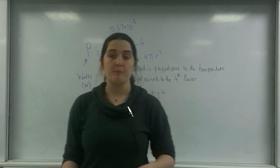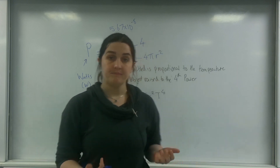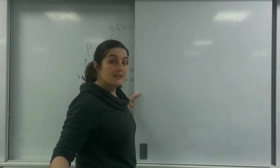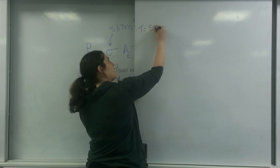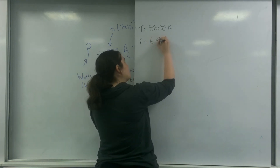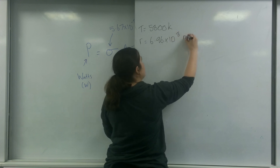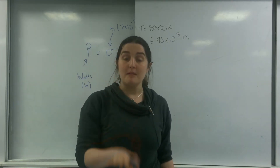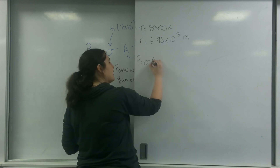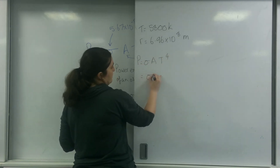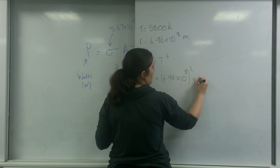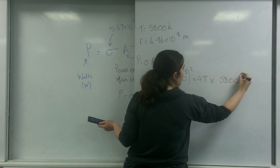Let's do some calculations to make some comparisons, starting with our sun. Our sun's temperature is approximately 5,800 Kelvin, and the radius of our sun — which is in your data sheet — is 6.96 times 10 to the 8 metres. We can work out the power emitted from our sun using this formula: power equals sigma times 4π times 6.96 times 10 to the 8 squared, times by 5,800 to the power of 4.